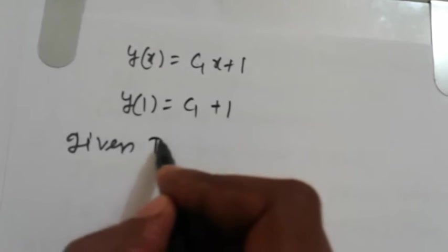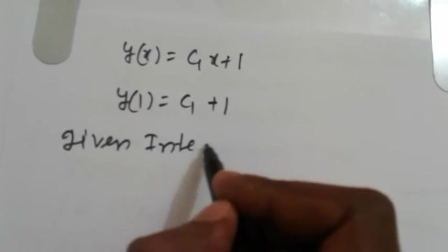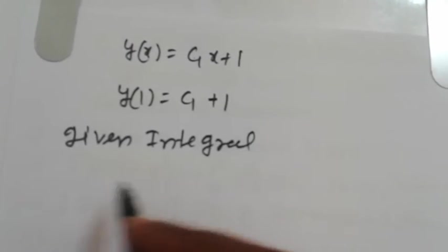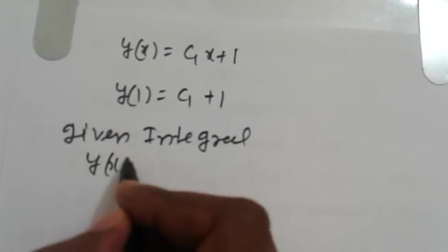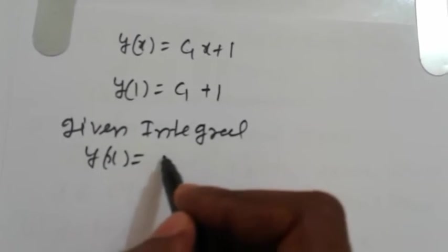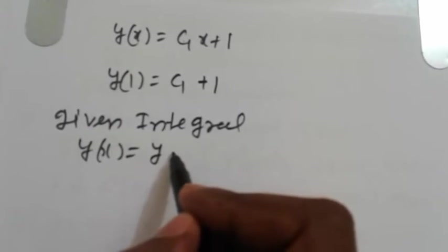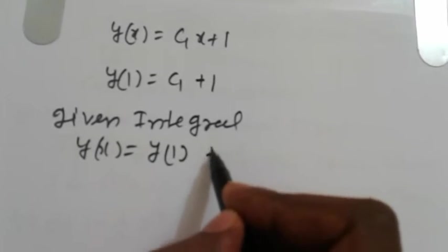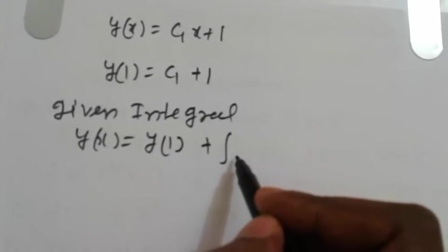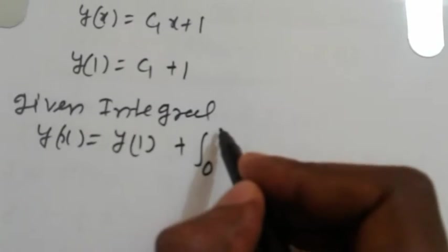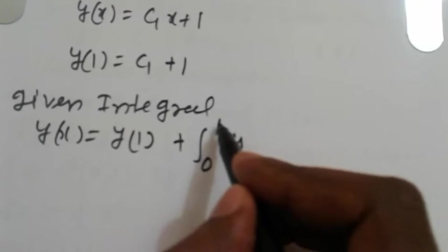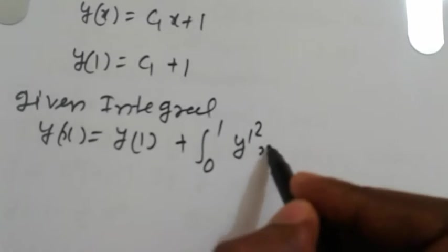Given integral: y(1) = (C₁ + 1)² plus integral from 0 to 1 of y'(x)² dx.